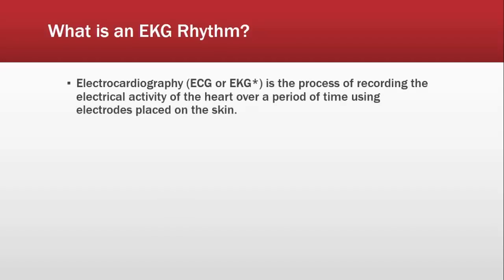So what is the EKG rhythm? Electrocardiography is the process of recording the electrical activity of the heart over a period of time using electrodes placed on the skin. The purpose of using the EKG is to record, see, or measure what is happening with the heart as far as the rhythm. There's something called the conduction system of the heart and it releases pulses — this is the activity occurring throughout the heart. We determine this by placing electrodes — lead pads on the skin — and we can see what's going on in the heart from different angles.